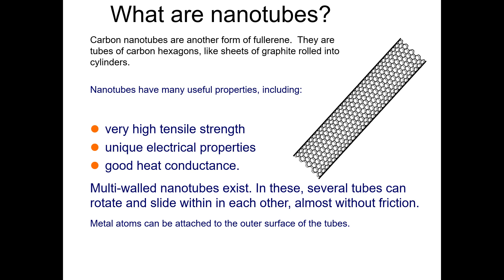We can change or enhance the properties of these nanomaterials. Metal atoms can be attached to the outer surfaces of the tube — this is something like what we call functionalization of the nanotubes, which is similar to the concept of doping. We enhance the properties for a particular application by doping or attaching metal atoms to the surface of the tubes.